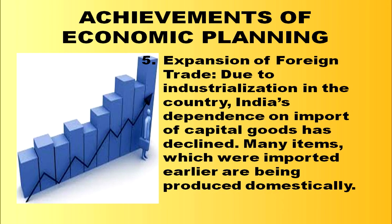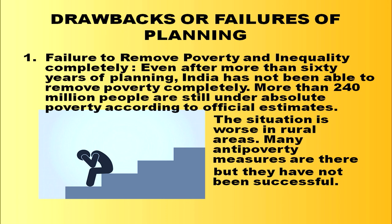The fifth achievement is expansion of foreign trade. Due to industrialization, India's dependence on import of capital goods has declined — many items previously imported are now produced domestically, representing considerable improvement in exports and imports. However, a major drawback is the failure to remove poverty and inequality completely. Even after more than 60 years of planning, poverty still exists, with more than 240 million people still under absolute poverty.